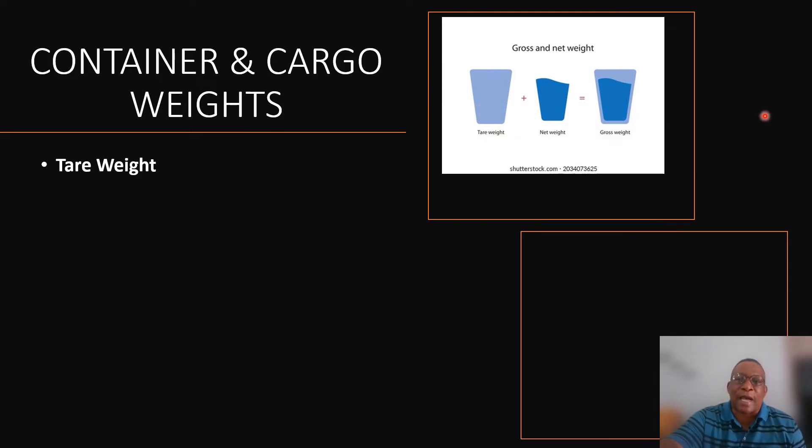We then have net weight. Net weight is the weight of the actual cargo after it has been packed in a container, the total weight of the cargo. When we combine both of them, tare weight plus net weight gives us gross weight.